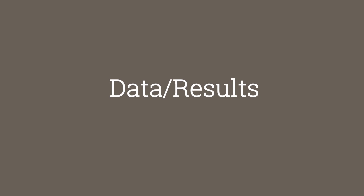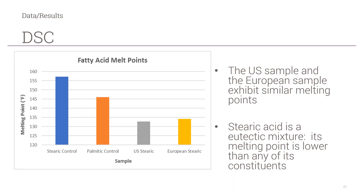In this section, I'll present the data and results of the testing. We can see in the chart at the left, the melt points of the U.S. and European samples are very similar. The U.S. and European samples are represented by the gray and yellow bars. Notice the blue and orange bars — the stearic acid and palmitic acid laboratory controls — have significantly higher melt points. This is because industrial stearic acid is a eutectic mixture, meaning its melting point is lower than any of its constituent components.